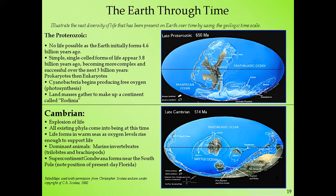The table illustrates the formation of continents through time. During the late Proterozoic, about 650 million years ago, no complex life existed as Earth initially formed 4.6 billion years ago. Simple single-celled life appeared 3.8 billion years ago, becoming more complex over the next 3 billion years. During this time, prokaryotic and eukaryotic cells existed, and cyanobacteria began producing free oxygen through photosynthesis.